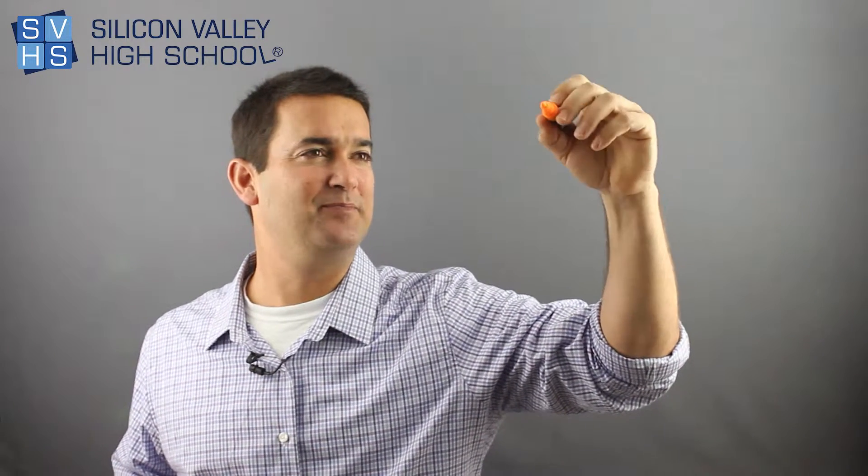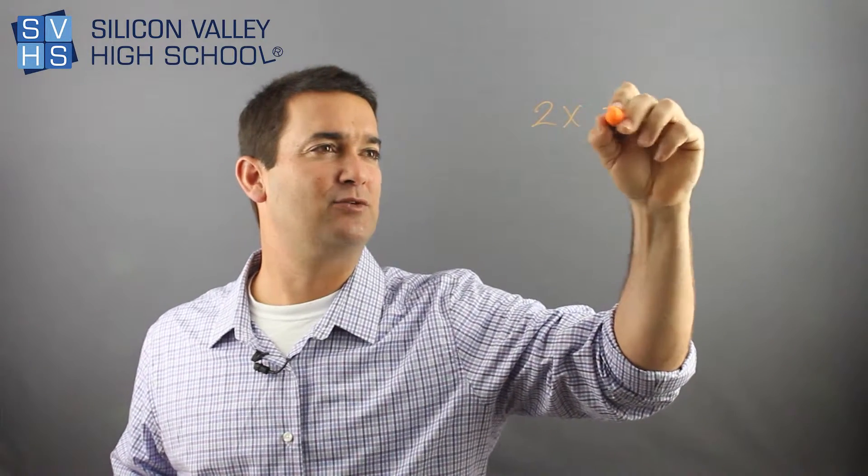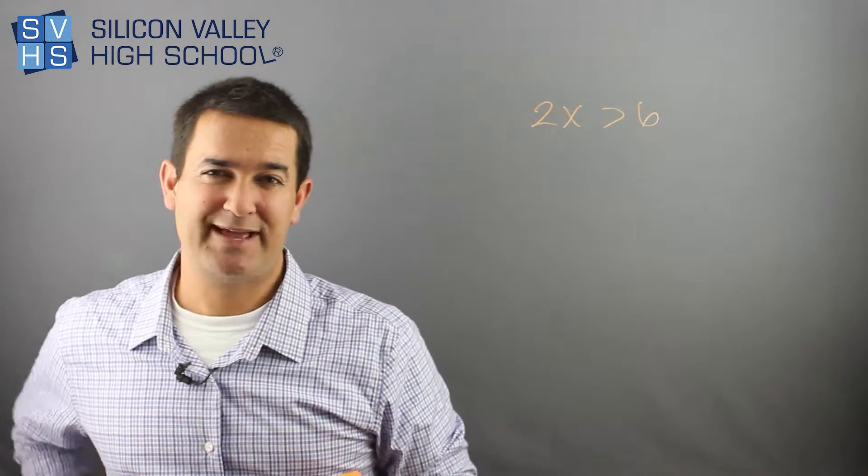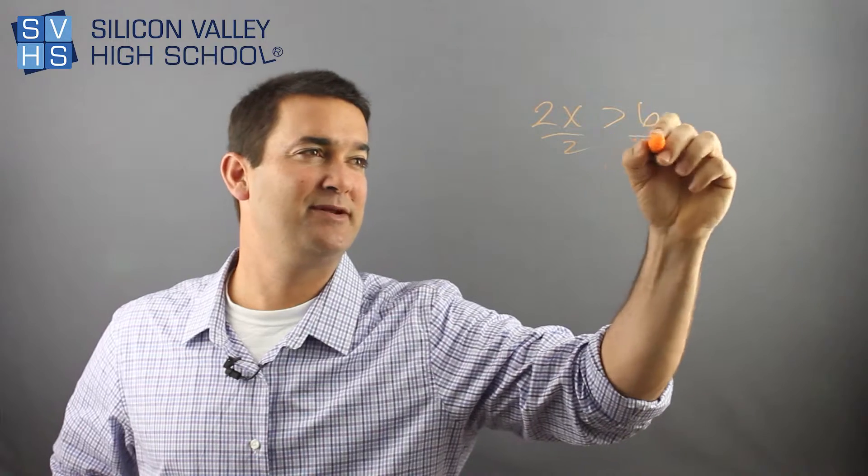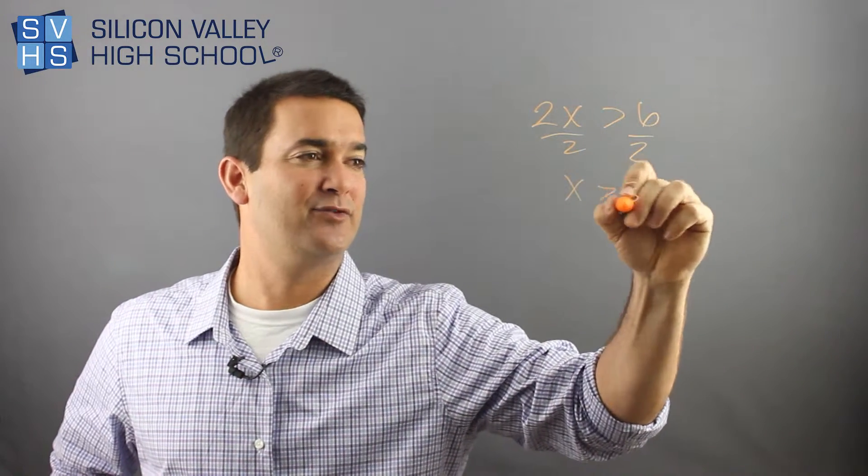So if you have something like this, like 2x is greater than 6, you do the same steps exactly, just pretend like that's an equal sign. Okay, no problem, divide by 2, divide by 2, x is greater than 3.